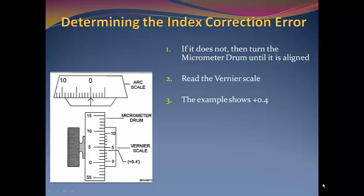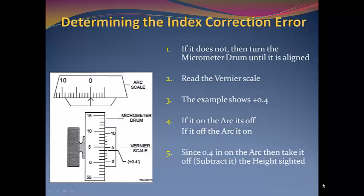The saying goes, if on the arc, it is off. If it is off the arc, it is on. Since 0.4 is on the arc, then we will take it off. In other words, we will subtract it from the height sighted.